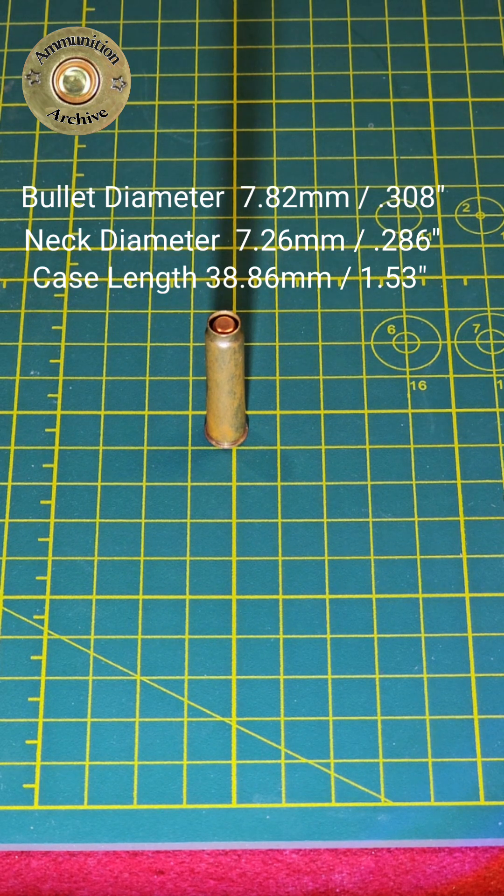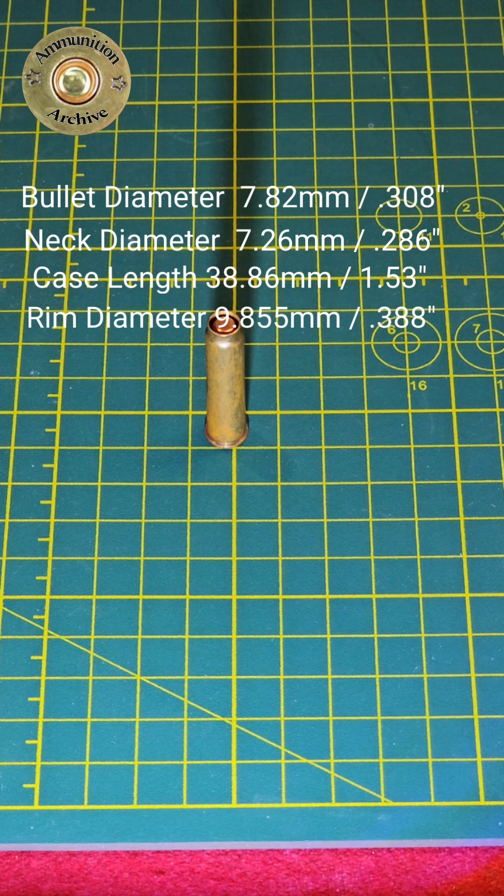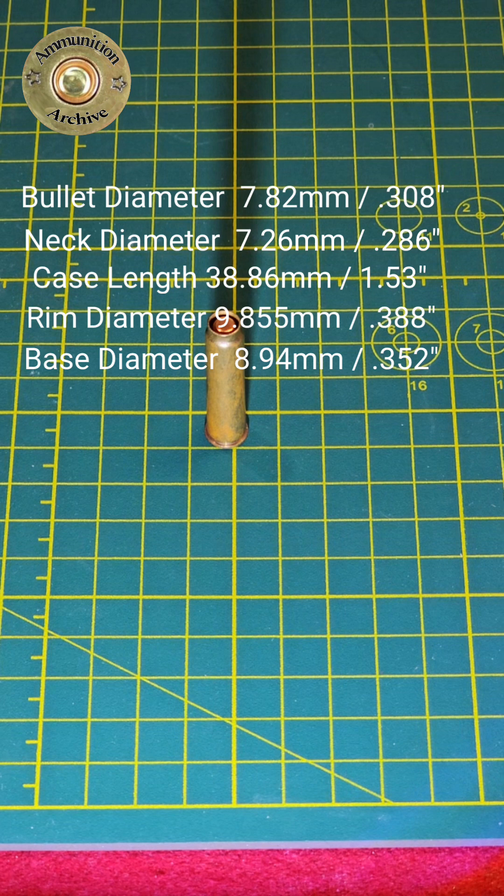Now the overall length is the same because of how this cartridge is designed. It has a rim diameter of 9.855mm or .388 of an inch, and it has a base diameter of 8.94mm or .352 of an inch.